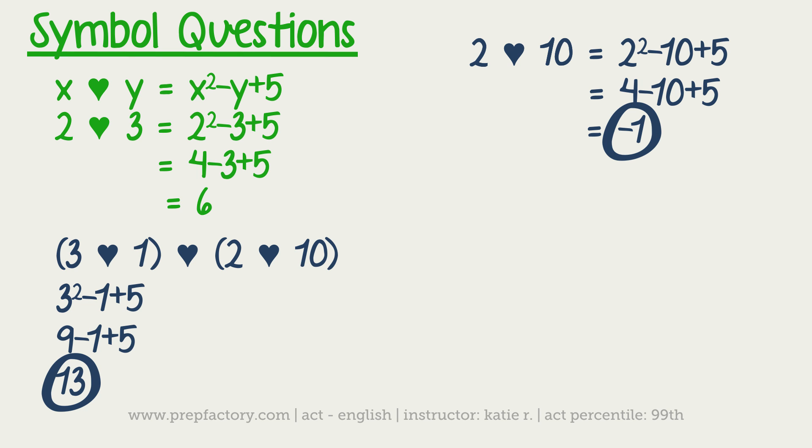So far we've got two answers: 3 heart 1 is 13 and 2 heart 10 is negative 1. Now comes the third and last portion of this. Since it said 3 heart 1 heart 2 heart 10, I replace 3 heart 1 with 13, so now I just say 13 heart negative 1. So 13 heart negative 1 is going to be a little bit more difficult because we have to square that, but same thing: 13 is x, negative 1 is y.